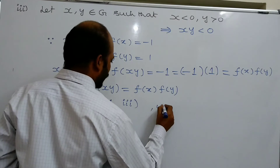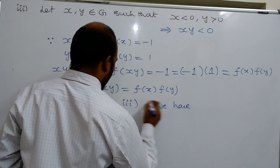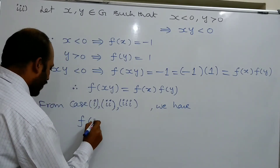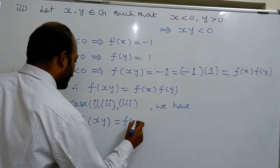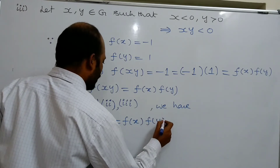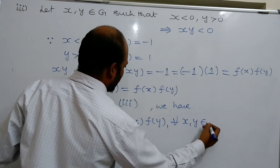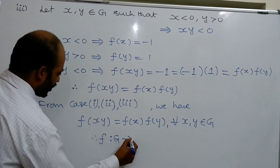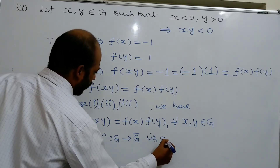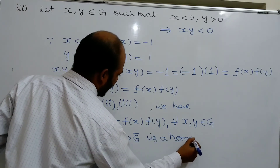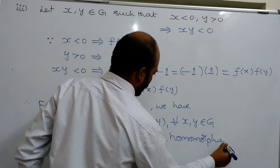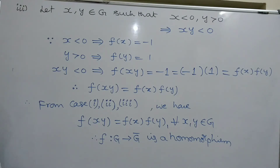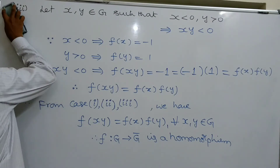Therefore, from Case 1, Case 2, and Case 3, we have f(xy) = f(x)·f(y) for all x, y ∈ G. This shows that f: G → Ḡ is a homomorphism. Now we also need to find the kernel of the mapping.